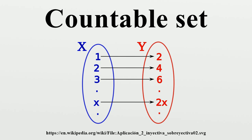A set is countable if it is finite, or it has the same cardinality as the set of natural numbers. Equivalently, a set is countable if it has the same cardinality as some subset of the set of natural numbers. Otherwise, it is uncountable. By definition, a set S is countable if there exists an injective function F from S to the natural numbers N = {0, 1, 2, 3, ...}.